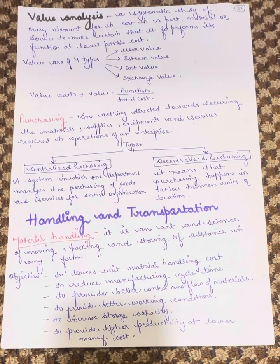Purchasing can be of two types: first is centralized and second is decentralized. Centralized purchasing is a system in which one department manages the purchasing of goods and services for the entire organization.